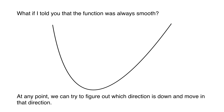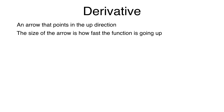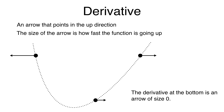What if the function is always smooth? At any point, we can try to figure out which direction is down and move in that direction. This leads us to the concept of a derivative — an arrow that points in the up direction, where the size of the arrow indicates how fast the function is going up. At a point where the function is clearly moving up to the left quickly, the derivative is a large arrow pointing left. At a point where it's moving up more slowly, the arrow is smaller. And at the bottom of the function, the derivative is an arrow of size zero.